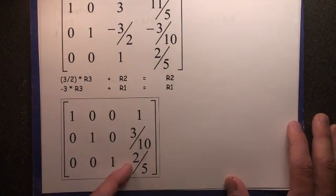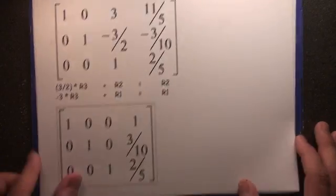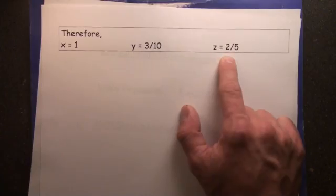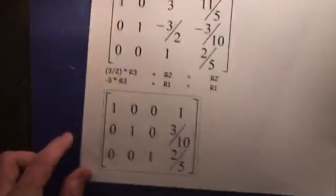A 1, a 3/10, and a 2/5. Therefore, the answer for x is, bam, 1. y is 3/10, z is 2/5. Double check again one more time.